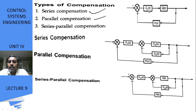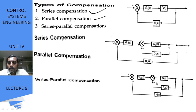In the series compensator, I have added a compensator Gc in series with the open loop transfer function. This is my input and I have added the compensator in series with the given system. If I add a compensator in parallel to the given system, that is a parallel compensation technique. The combination of series and parallel is the series-parallel compensation, where Gc1 is the series compensator and Gc2 is the parallel compensator. Using this series-parallel compensator we can reduce size and improve the performance of the system.